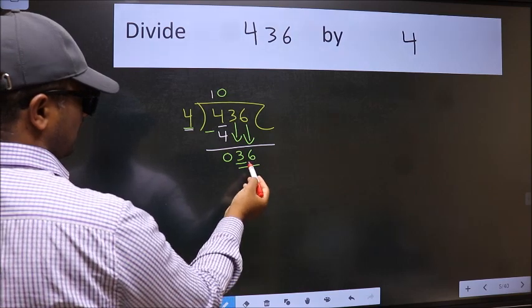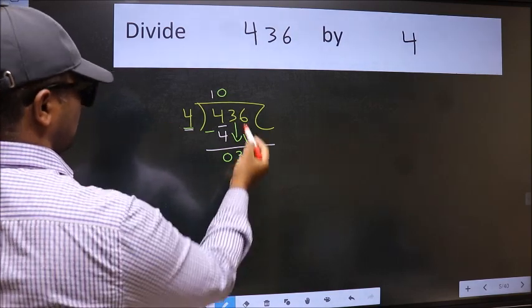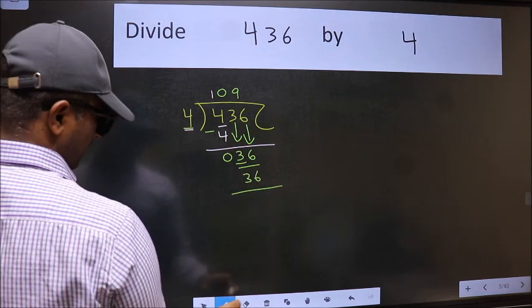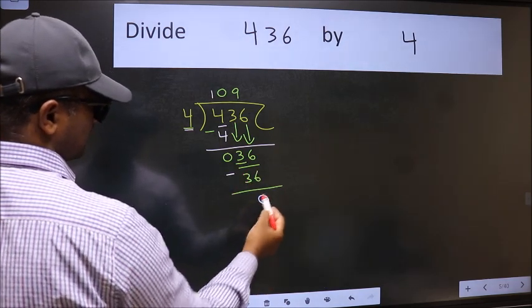Now 36. When do we get 36 in 4 table? 4 nines 36. Now we should subtract. We get 0.